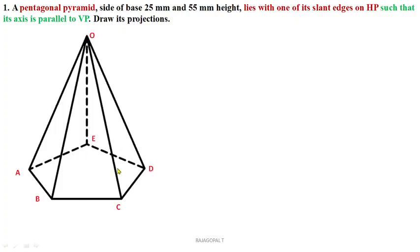First of all, what is a slant edge? As we discussed in earlier cases, OA, OB, OC, OD, OE — all are slant edges; five slant edges in total. Any one of these slant edges has to be on HP.